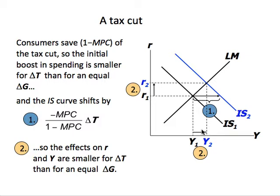Therefore, for tax cuts, the fraction 1 minus MPC of the tax cut leaks into saving. As a result, aggregate spending only rises by MPC times the tax cut. The main point is that the effects on interest rate and output Y are much smaller for delta T than for an equal change in government expenditure delta G.